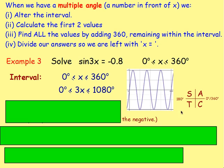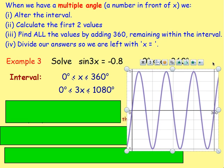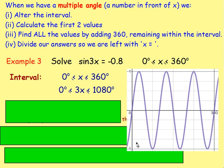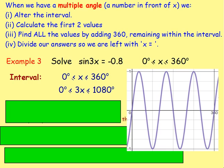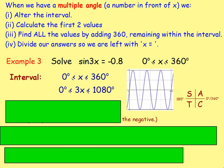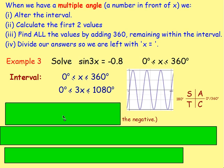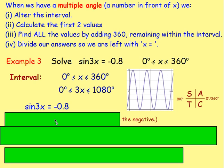If you imagine drawing a horizontal line at negative 0.8, you can see there are going to be 1, 2, 3, 4, 5, 6 places that it will touch the graph — so you're looking for 6 answers. Start by finding the acute angle: take inverse sine of 0.8 — ignore the negative for now — and think about CAST. Because sine is negative, you're not using S or A; you want the quadrants where sine is negative, which are T and C.